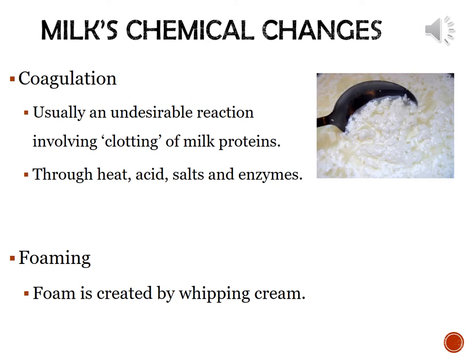There are two main chemical changes we're going to talk about with milk: coagulation and forming foam. Coagulation occurs when the proteins from the milk separate from the main liquid part of the milk — it's usually an undesirable reaction involving the clotting of milk proteins. You can see large protein chunks rising to the top forming an undesirable layer. You can achieve this by heating milk, adding acid, adding salts, or enzymes. Creating a foam is the second principle — simply by whipping cream and incorporating air, you can create a foam.